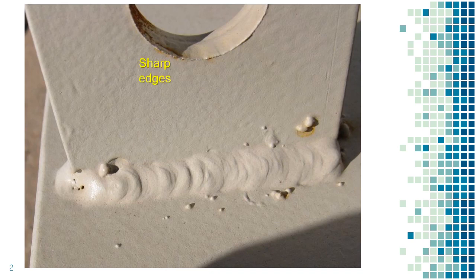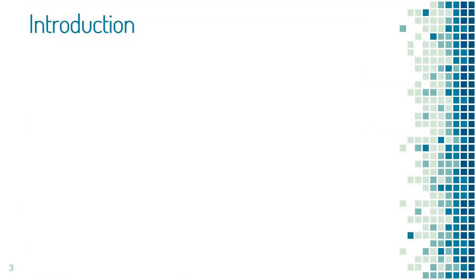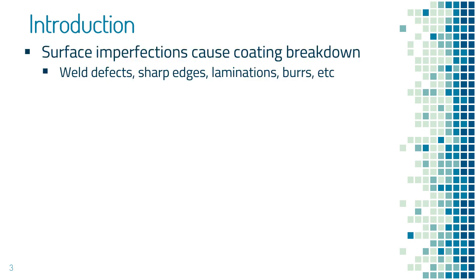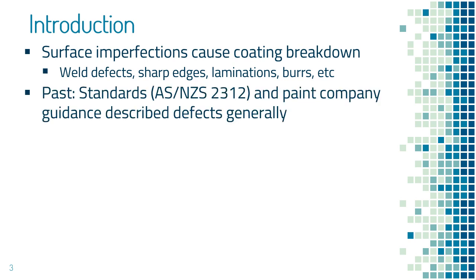Sharp cut edges are perhaps the best known and most common. Weld defects such as spatter, porosity and undercut can appear on welded fabrications. Rough welds can also cause breakdown, although this example has a relatively smooth weld cap. These, along with other defects such as burrs, pits, shelling and laminations, have been known corrosion initiators for many years. Specifiers would rely on guidelines from standards such as AS/NZS 2312 and coating supplier data to define them and possible treatment.